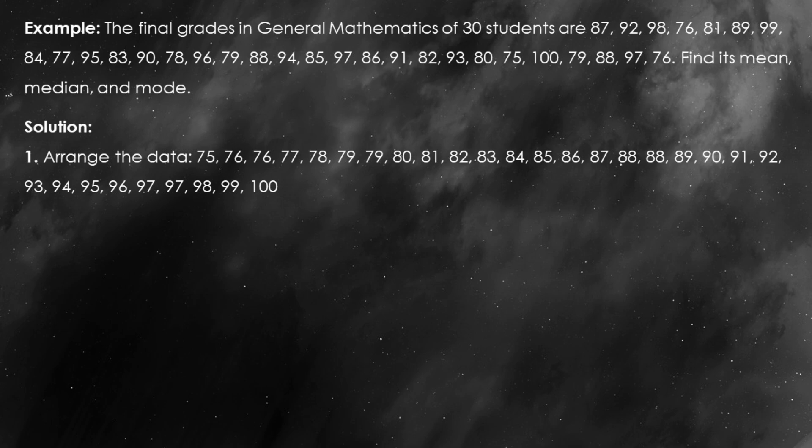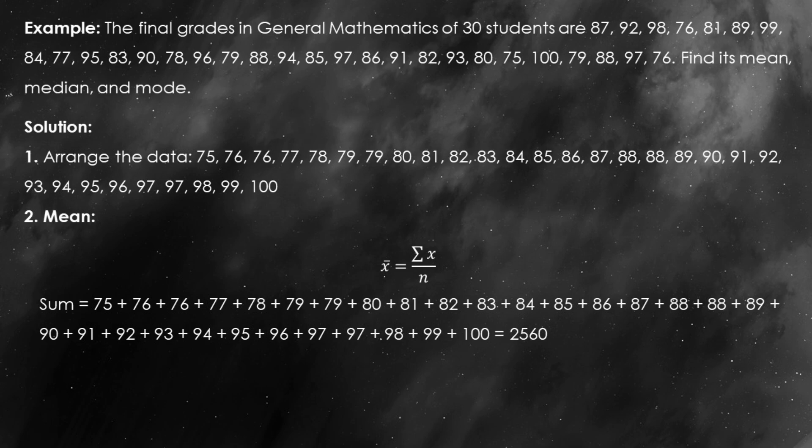To find the mean, we'll start by summing all the grades. You may pause this video to calculate the sum. The sum of all the grades is 2,560. Now we'll divide this total by the number of students, which is 30. Mean equals 2,560 divided by 30, which gives us 85.33. So the mean, or average grade, for these students is 85.33.